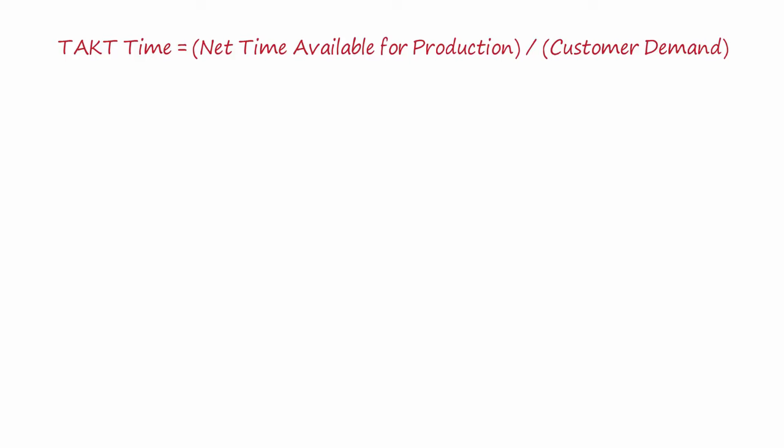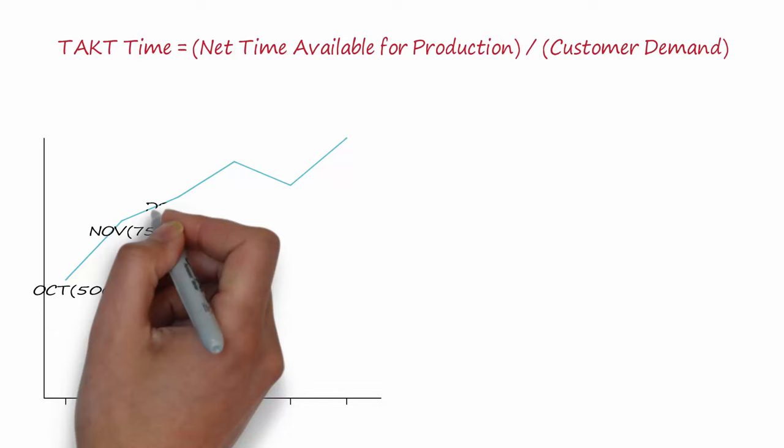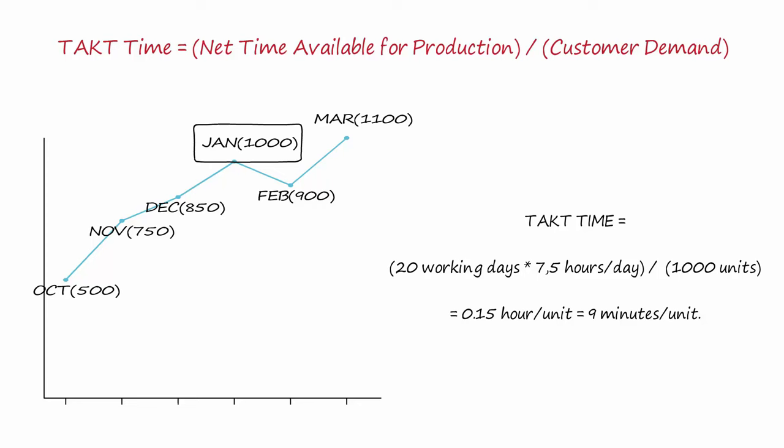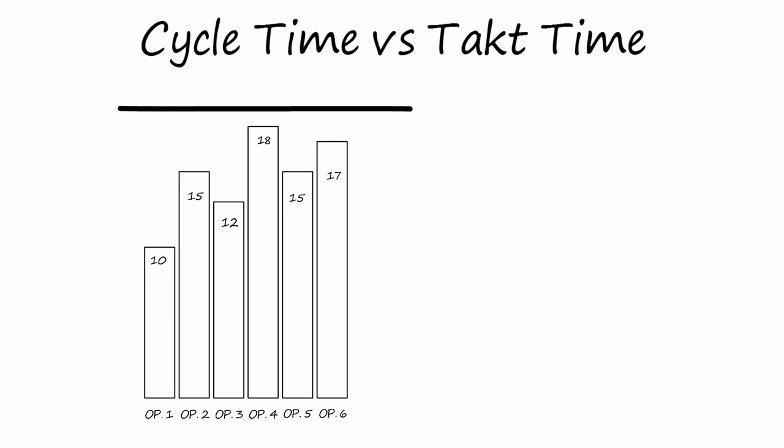Example: if we have a demand like in this graph, takt time in January equals 20 working days multiplied by 7.5 hours a day, divided by 1000 units, equals 9 minutes per unit. Takt time has to always be higher than the production time of each station.